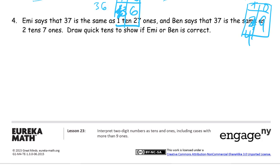Now we have a word problem. Emmy says that 37 is the same as 1 10 and 27 1s. And Ben says that 37 is the same as 2 10s and 7 1s. Draw quick 10s to show if Emmy or Ben is correct. So read, draw, write. We read it, now we're going to draw it. So this is Emmy.